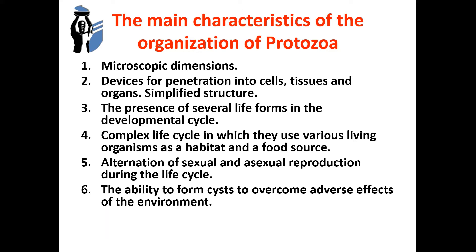The most severe human protozoosis are caused by representatives of the class called Sporozoa. All species of unicellular animals of this class are human and animal parasites. There is intracellular parasitism. Sporozoa, as representatives of type protozoa, have the same features: simplified structure, difficult life cycles with many life forms, and alternation of sexual and asexual reproduction. At a certain stage of development, they form spores.